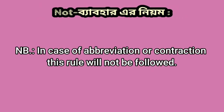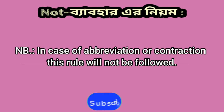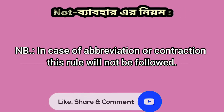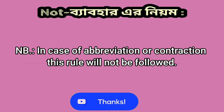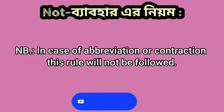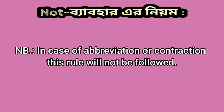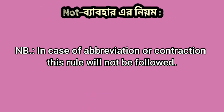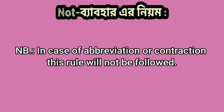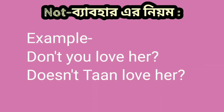In case of abbreviation or contraction, this rule will not be followed. In the case of contractions, we use don't, doesn't, didn't — and in these forms, the 'not' sits with 'do,' so this rule is not followed. For example: don't you love her?